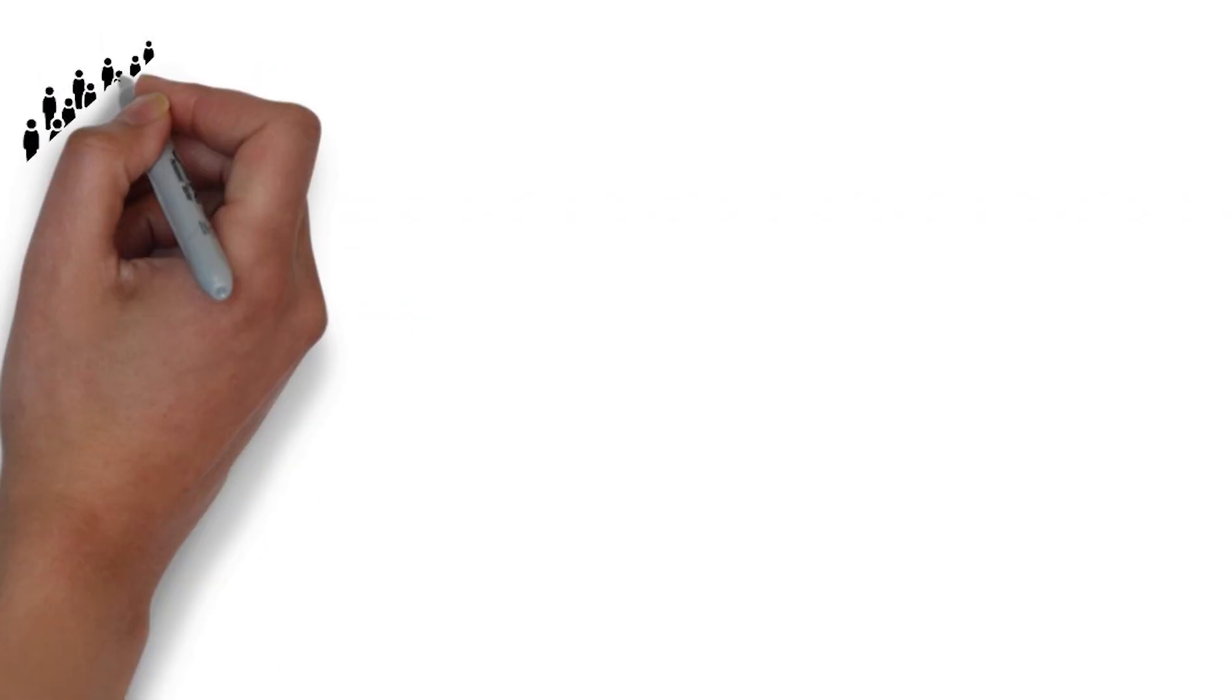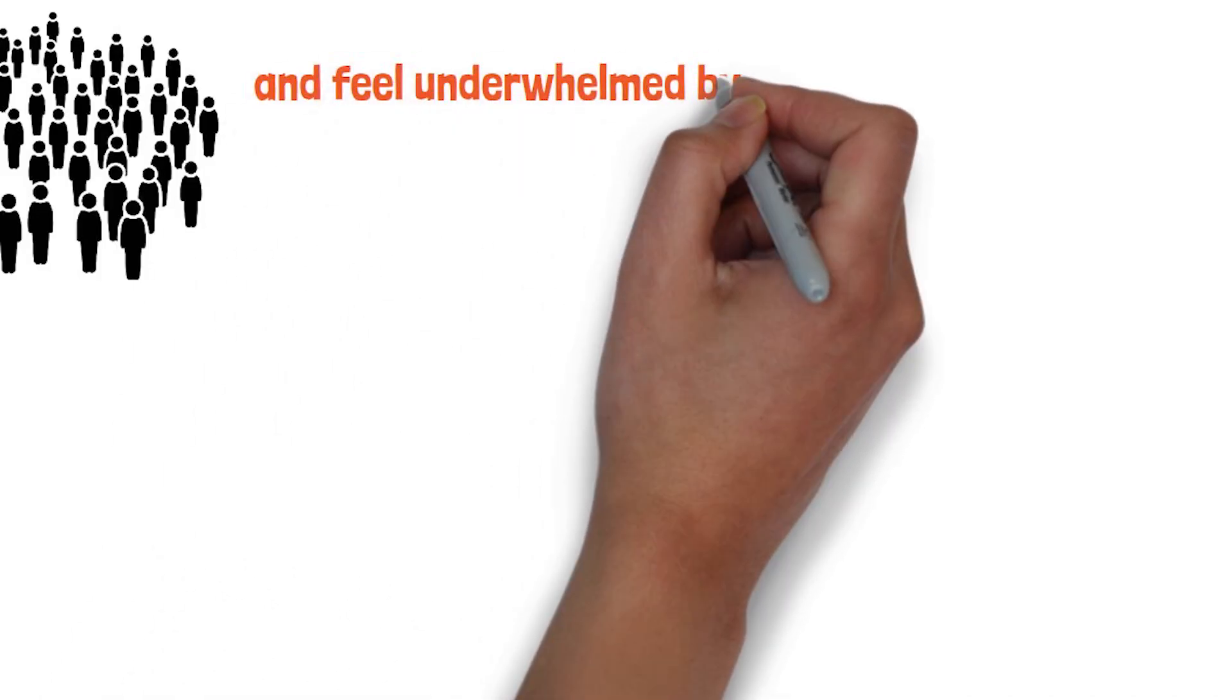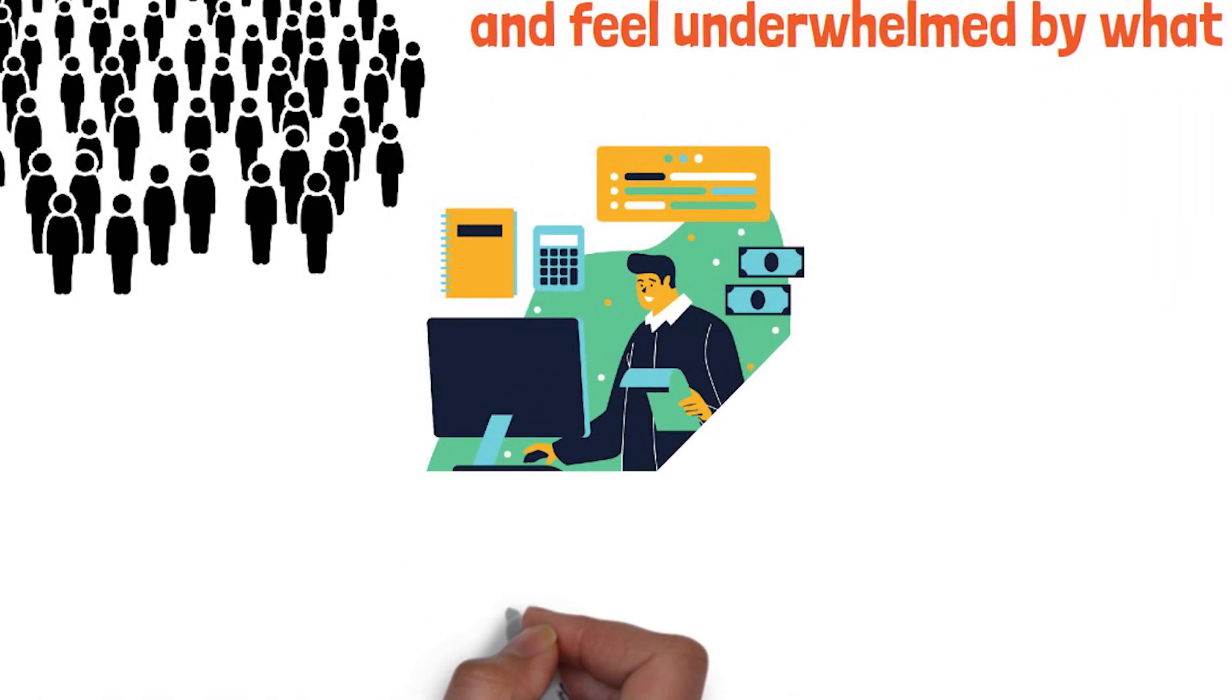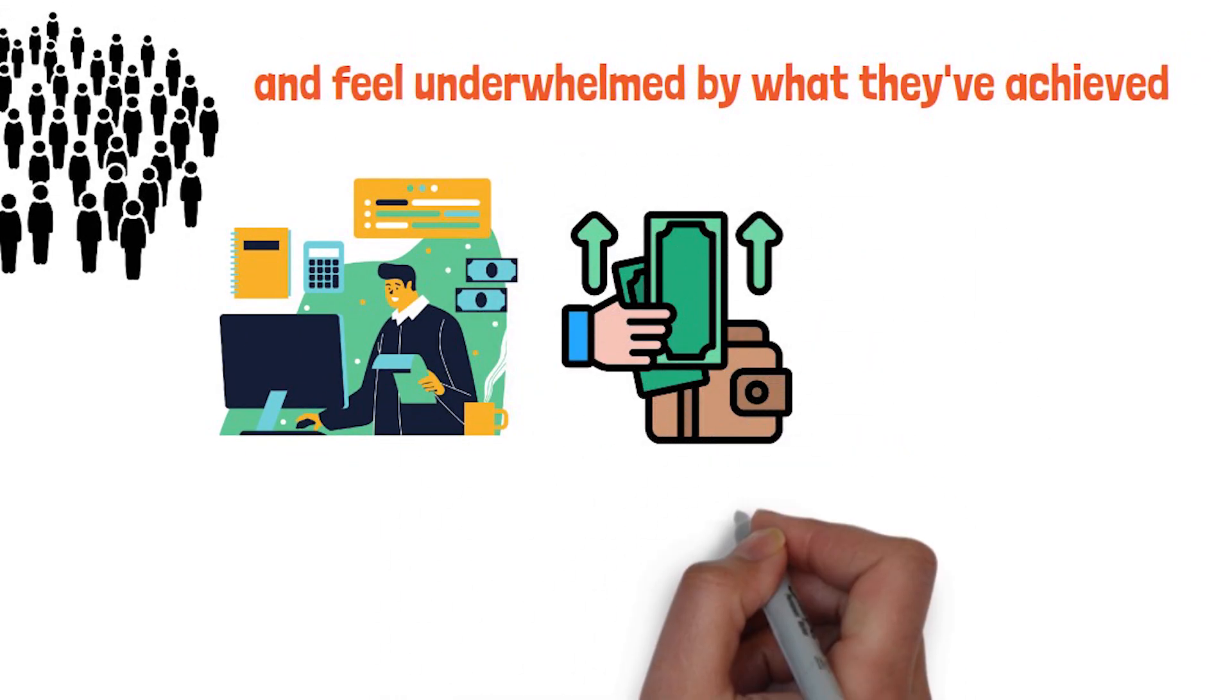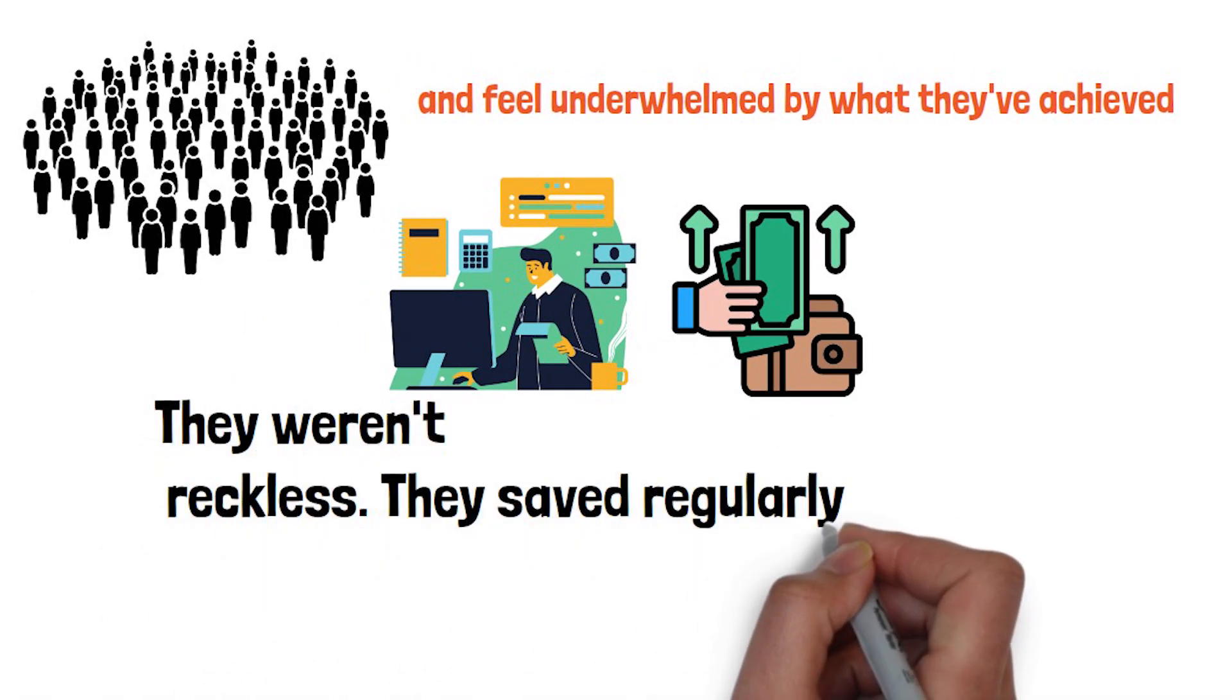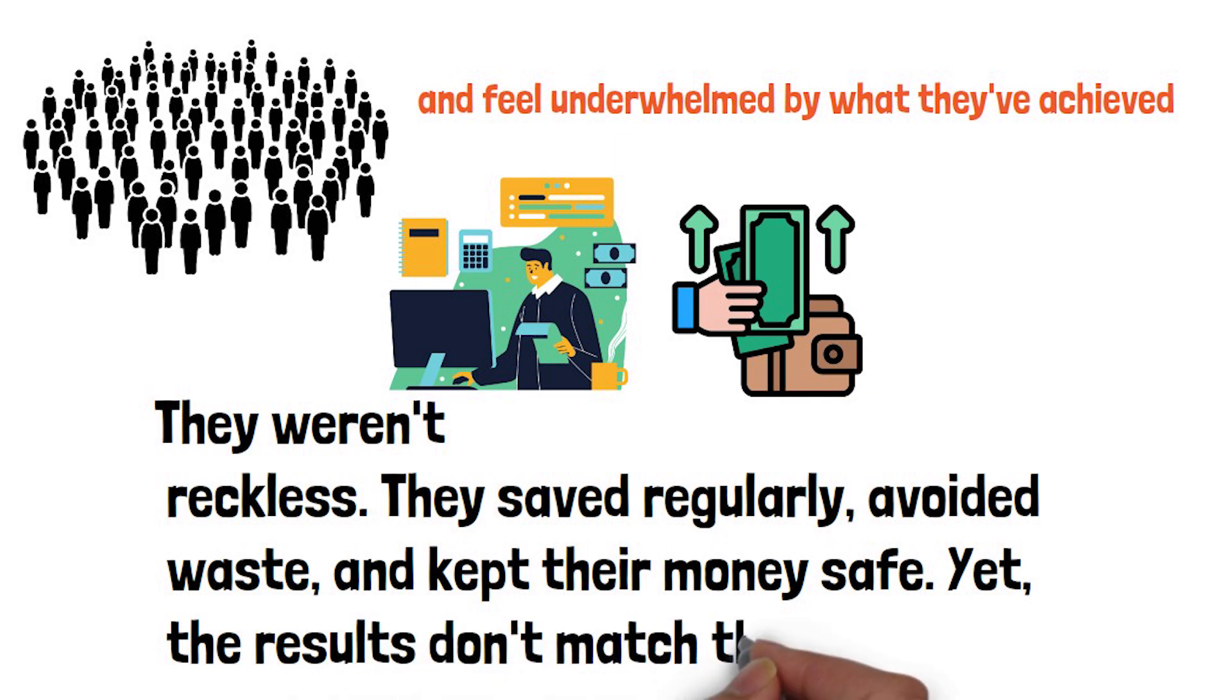Millions of people set aside money for decades only to reach retirement and feel underwhelmed by what they've achieved. On paper, the numbers in their account are bigger, but when it's time to spend that money, it doesn't stretch the way they'd hoped. They weren't reckless. They saved regularly, avoided waste, and kept their money safe. Yet the results don't match the effort.